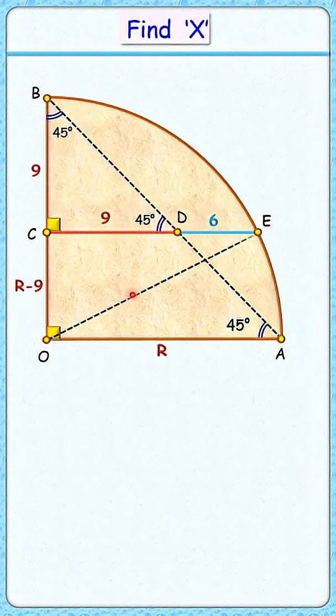Let's join OE. Length here OE is the radius, so R centimeters. Now in this right angle triangle, applying Pythagorean theorem, we will get (R minus 9) squared plus 15 squared is R squared.